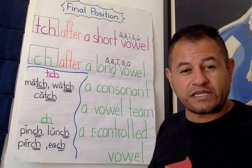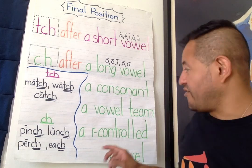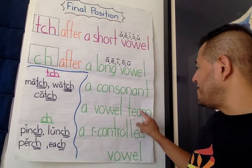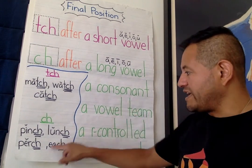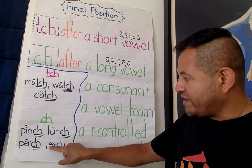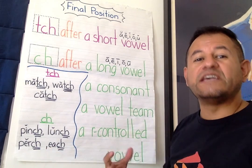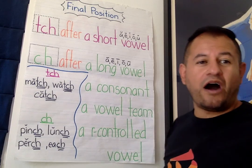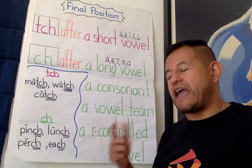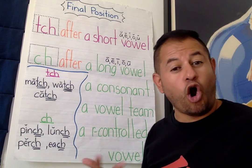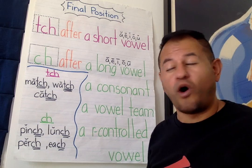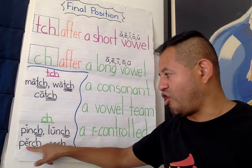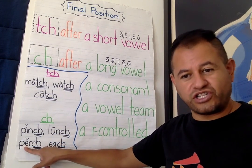Also, if we have a vowel team — two vowels that are together, like in the word "team" where E-A is a vowel team — like "each," E-A, then it's going to be C-H. If we have an R-controlled vowel — A-R, E-R, I-R, O-R, or U-R — then you're also going to get a C-H, like we have here in "perch."